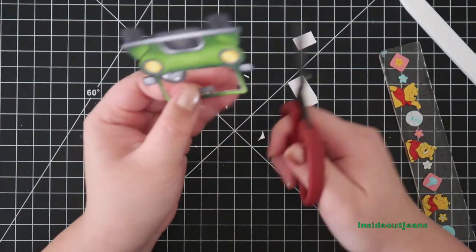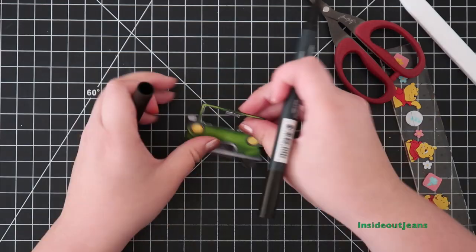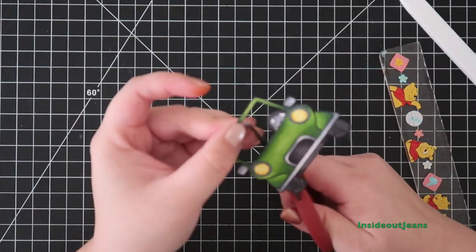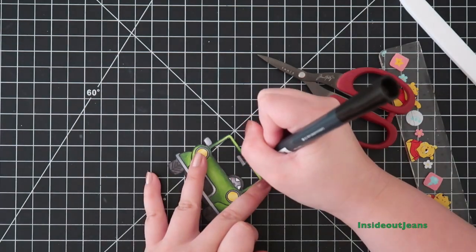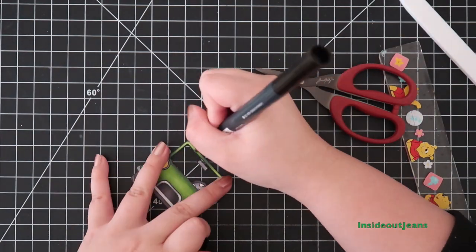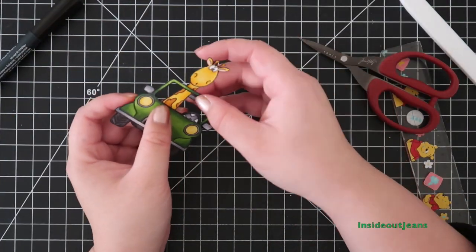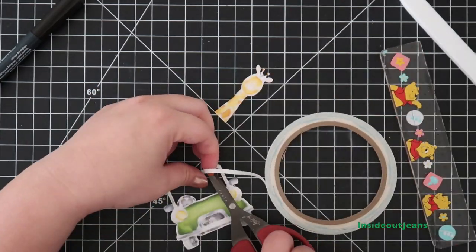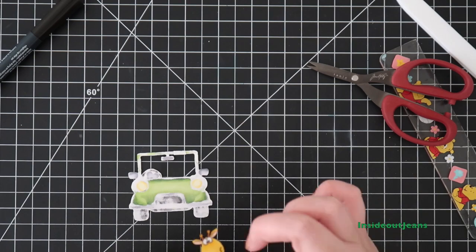Especially when you can see the giraffe's neck and not just his head in the jeep. And after cutting the image, I'll also run a memento tuxedo black marker on the edges just to finish it off. And once I'm done with that, I'll attach the giraffe and the jeep together so it's one cohesive piece.